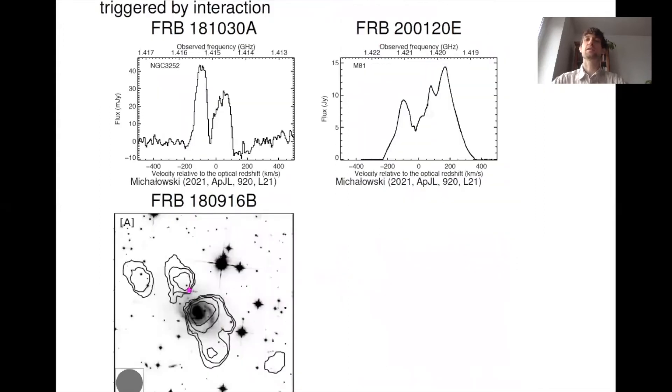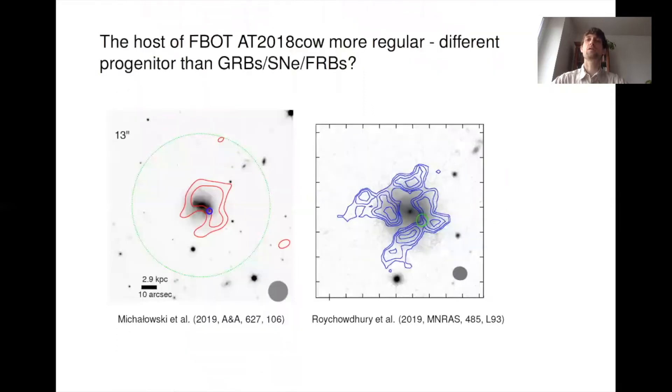Similar story is for fast radio bursts. Here we either see very asymmetric H1 line profiles, or in one case we even see H1 companions. So the birth of FRB progenitors is somehow connected with galaxy interaction. In both cases of GRB supernovae and FRBs, the conclusion is that this data supports fast channel of their progenitors.